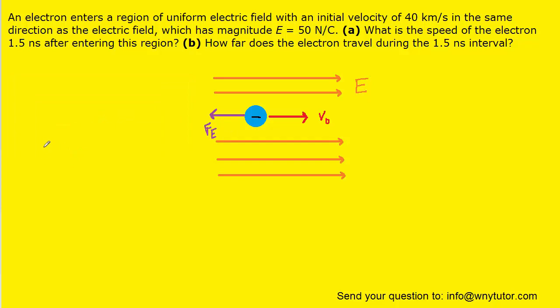Now, we know from an earlier semester of physics, perhaps, that the acceleration of an object is going to equal the net force acting on the object divided by its mass. Now, the only force acting on this electron in this scenario is that electrical force. So, we can fill in F_E for the net force.